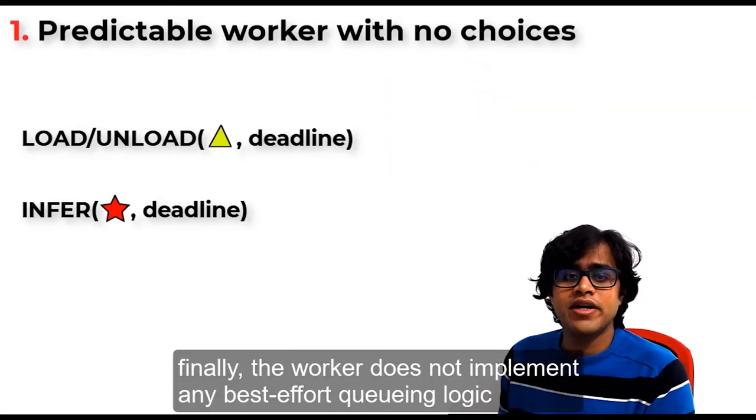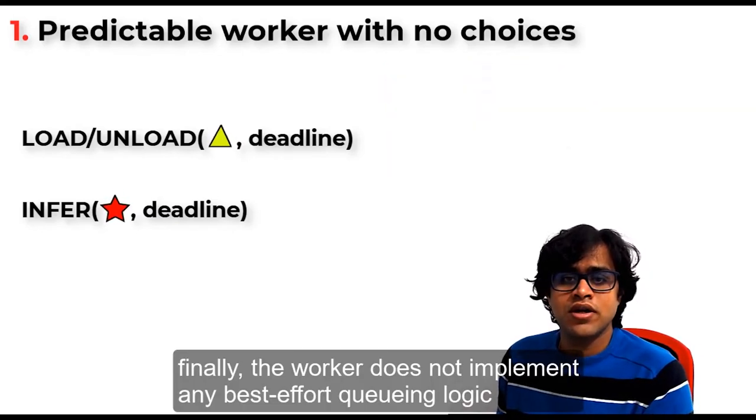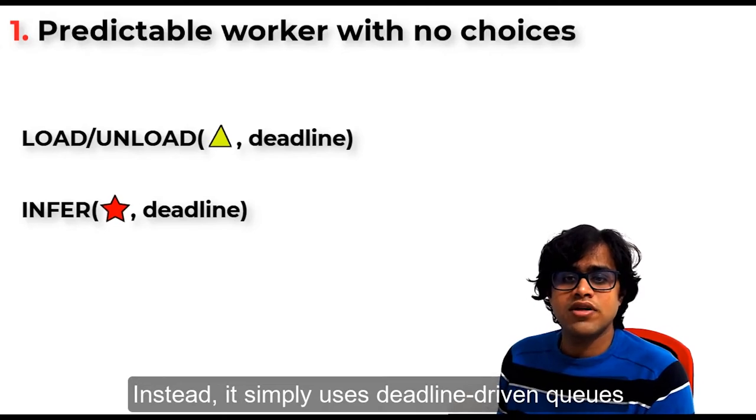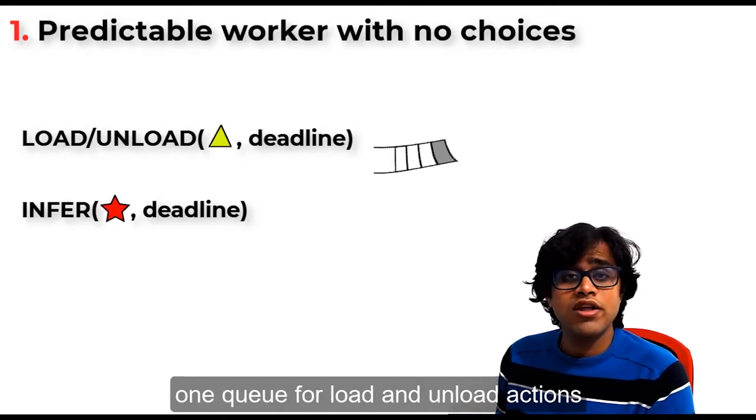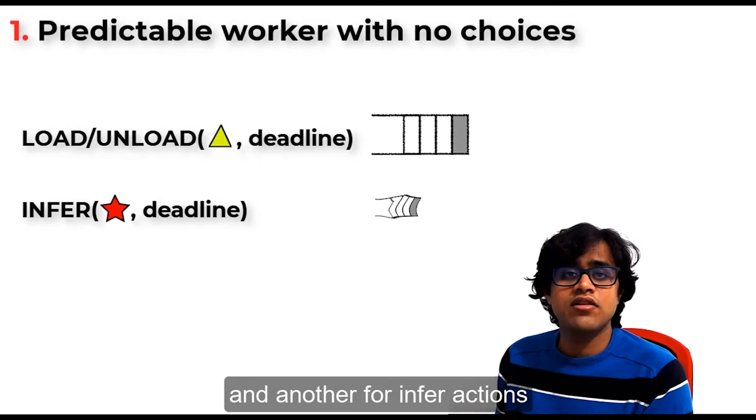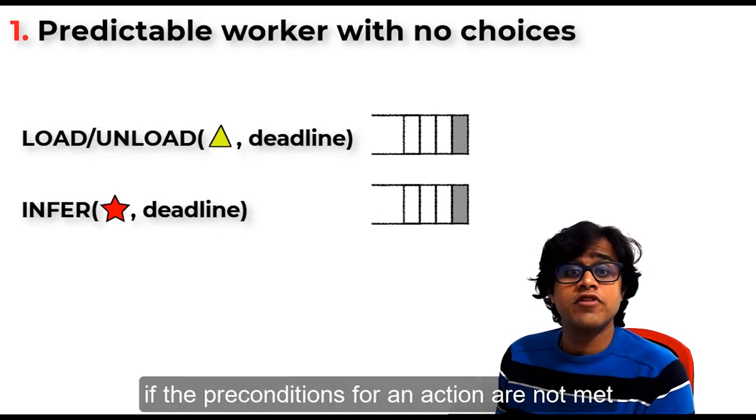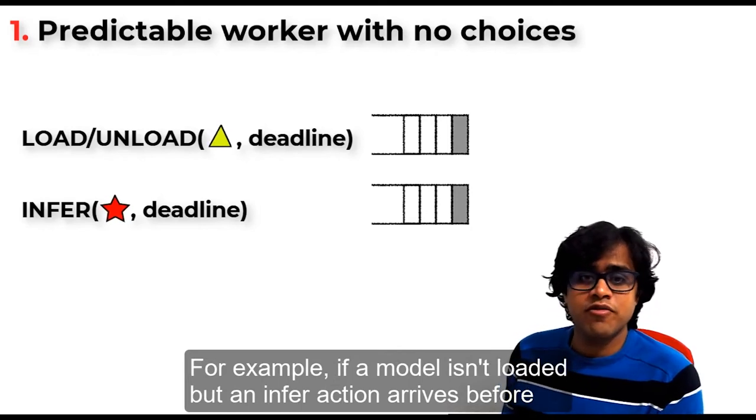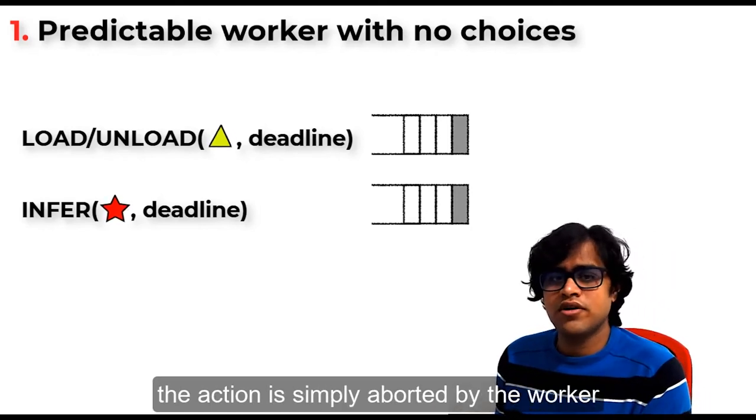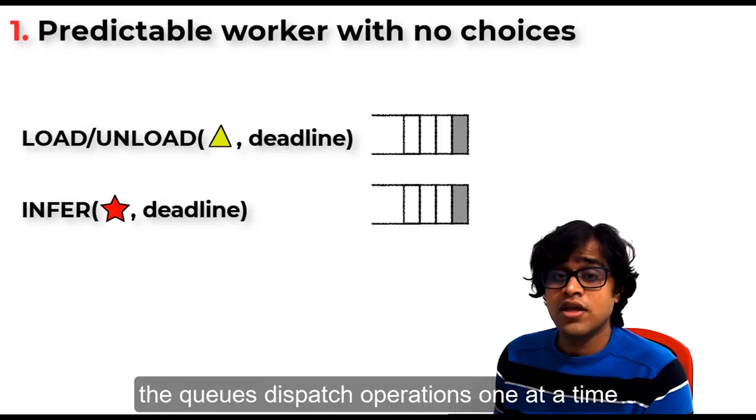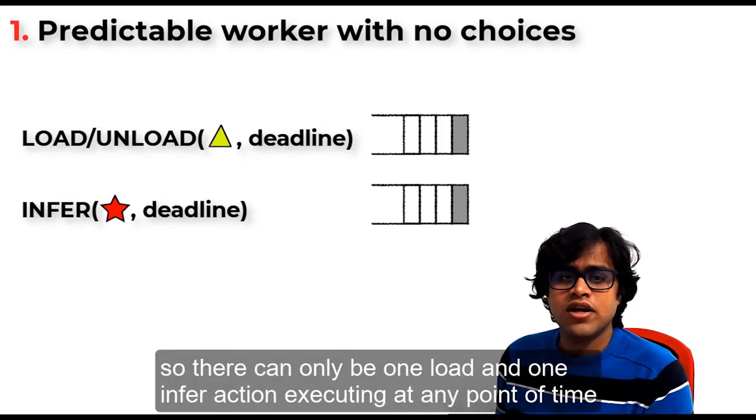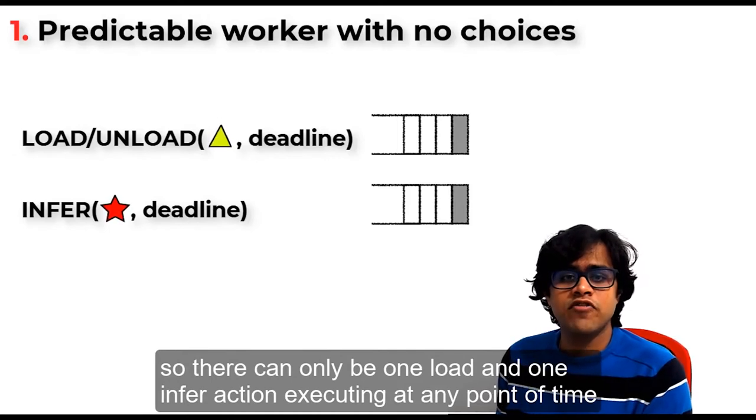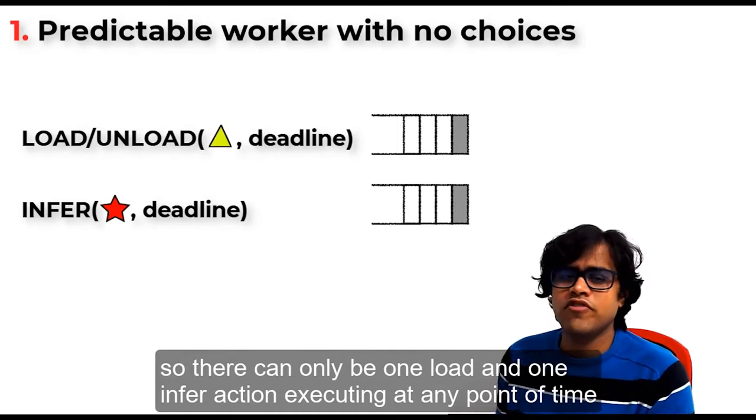Finally, the worker does not implement any best-effort queuing logic. Instead, it simply uses deadline-driven queues. One queue for load and unload actions and another for infer action. If the preconditions for an action are not met, for example, if a model isn't loaded but an infer action arrives before, the action is simply aborted by the worker. The queues dispatch operations one at a time, so there can only be one load and one infer action executing at any point of time.